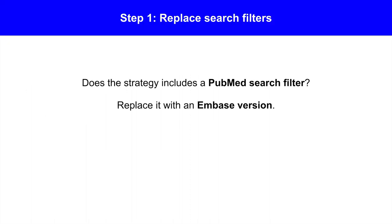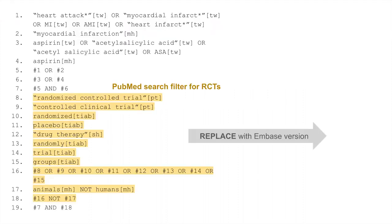Step 1: Replace search filters. If the strategy includes a PubMed search filter, replace it with an Embase version. In our case, we have a PubMed search filter for randomized controlled trials. We need to replace these statements with an Embase search filter for randomized trials.